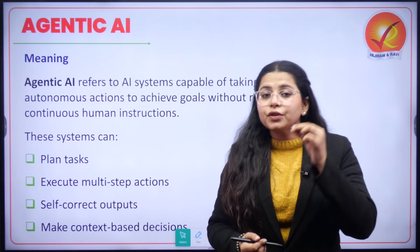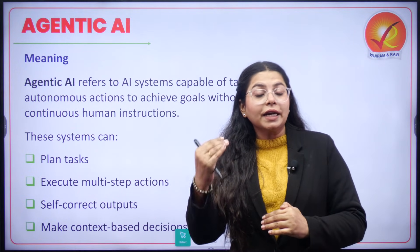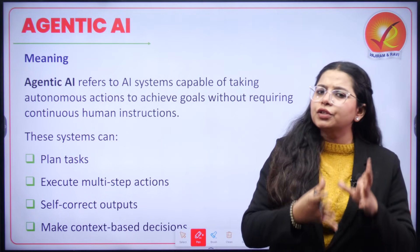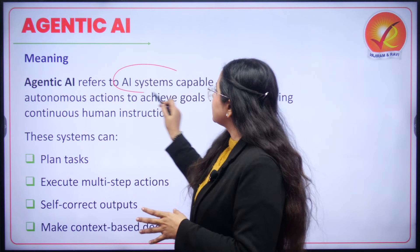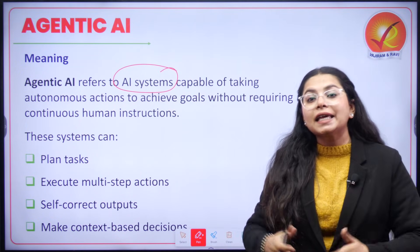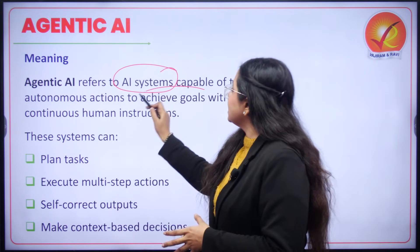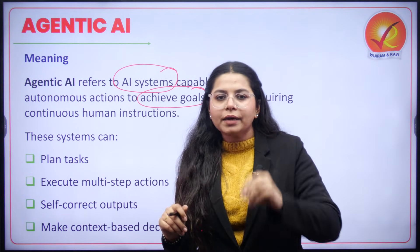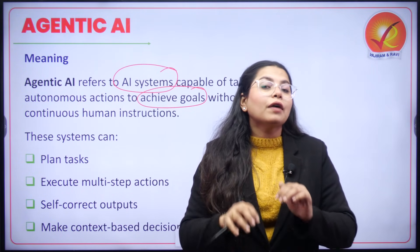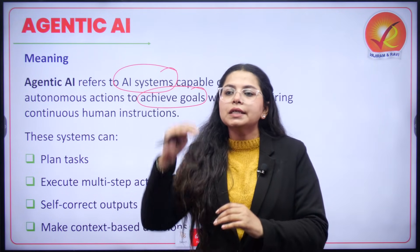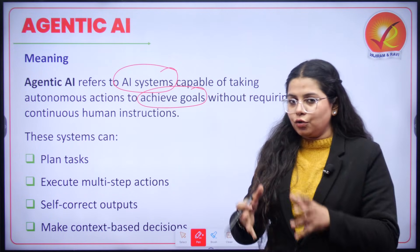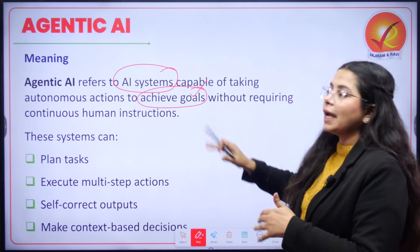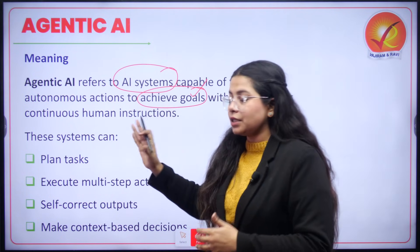When we talk about artificial intelligence, we have seen an upgraded version in the form of agentic AI. Basically, it refers to artificial intelligence systems, but these systems are capable of taking autonomous actions and they can easily achieve goals without continuous human intervention. If you are talking to an AI model, maybe ChatGPT or Google Gemini, you have to give continuous human instructions and then you get results. But in agentic AI, you set a specific goal that can be achieved without continuous instructions.